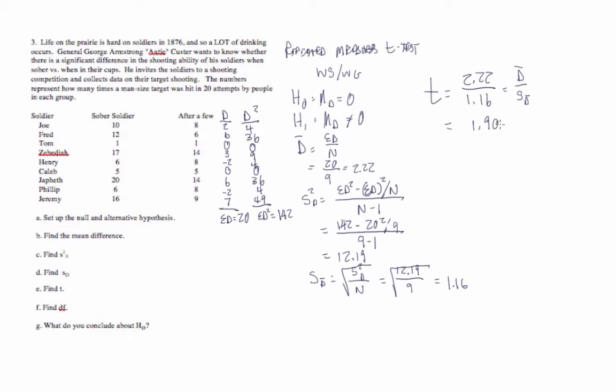We get our degrees of freedom. That's equal to n minus 1. There are 9 people. Minus 1 is equal to 8. We look up our t critical. With 8 degrees of freedom, it comes out to be a 2.306.